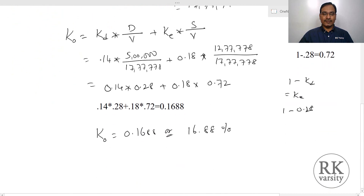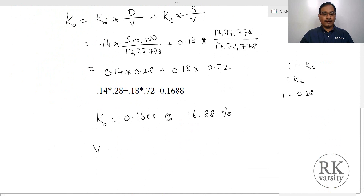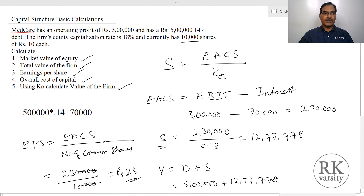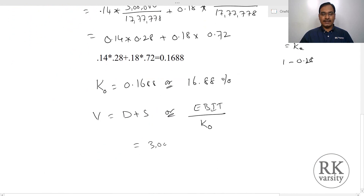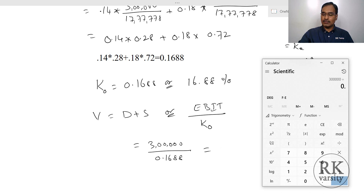The final step is to use the overall cost of capital to calculate the value of the firm. To get the value of the firm you have two equations: one is market value of debt plus market value of equity; alternatively, EBIT divided by the capitalization rate, which is the overall cost of capital. Here EBIT is 3 lakhs, so 3 lakhs divided by 16.88% (0.1688) gives 17,77,251.